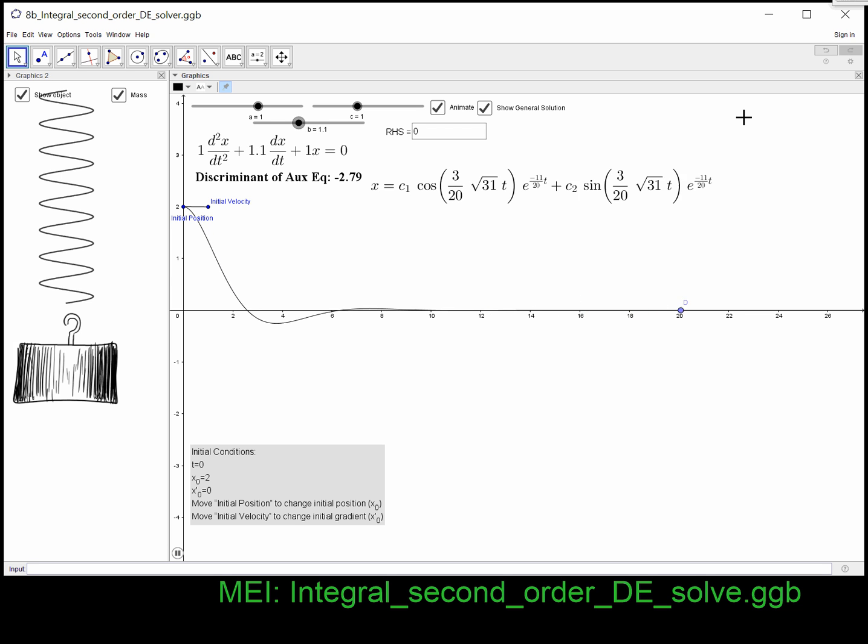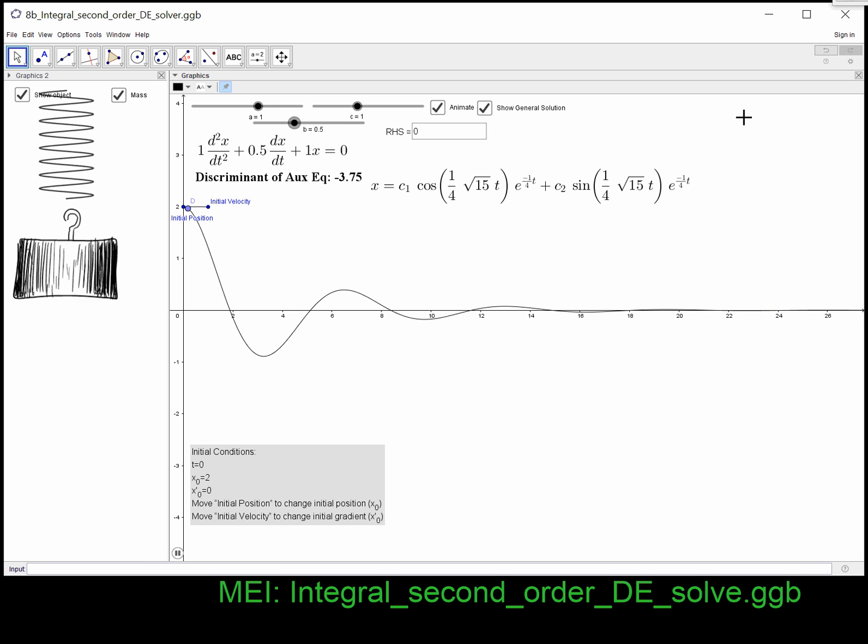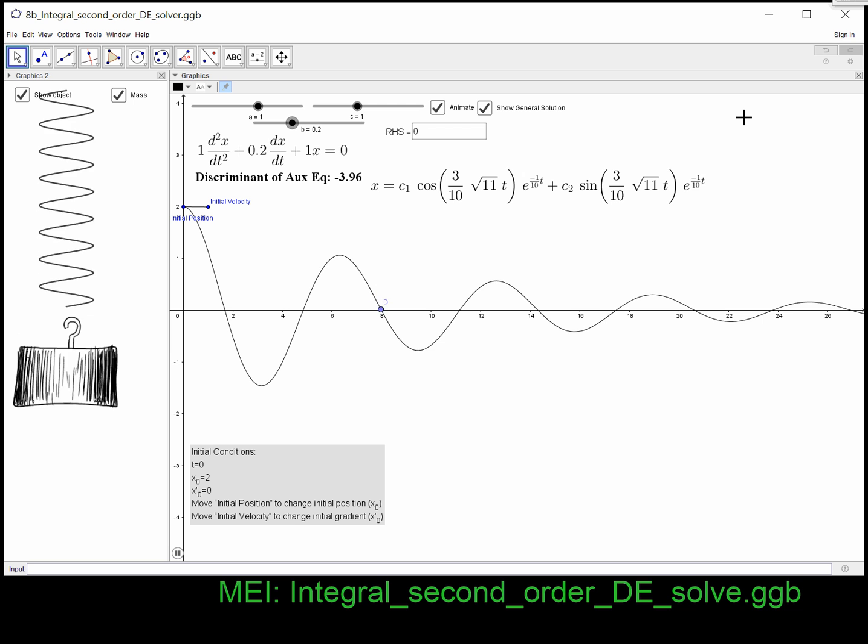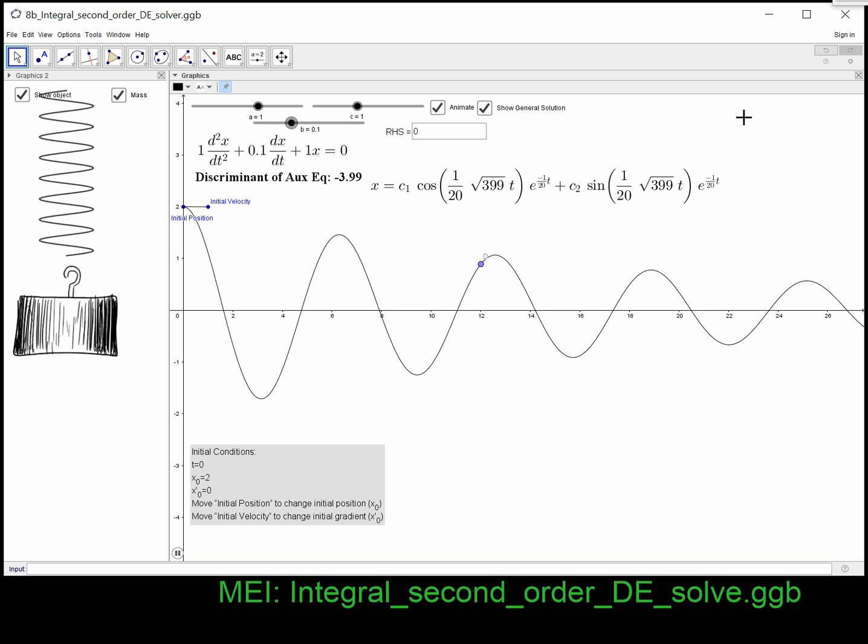And if I then start reducing my damping coefficient, this is called light damping. Because here we've got quite a lot of oscillation still going on with a lot of overshoot. And that's not going to be very pleasant.